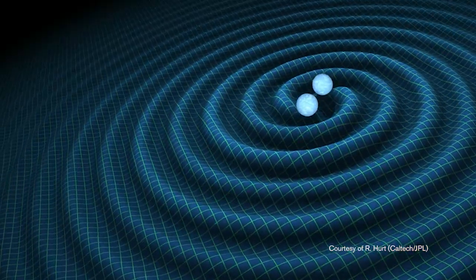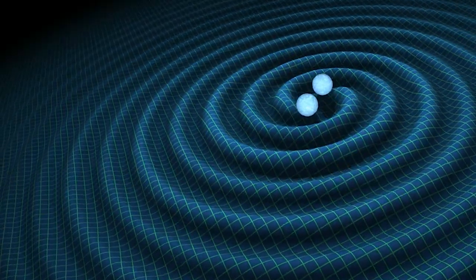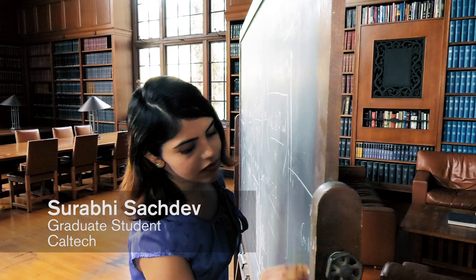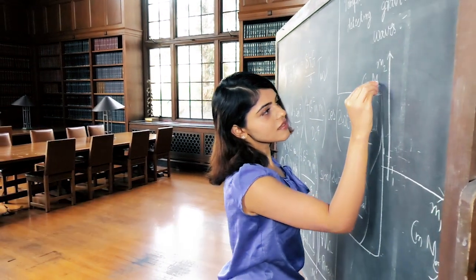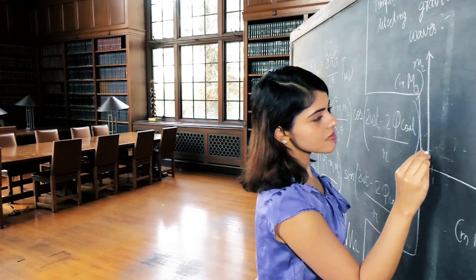Gravitational waves are ripples in the fabric of the universe, which we call space-time. Think of space-time as incorporating all three spatial dimensions and also a time dimension.